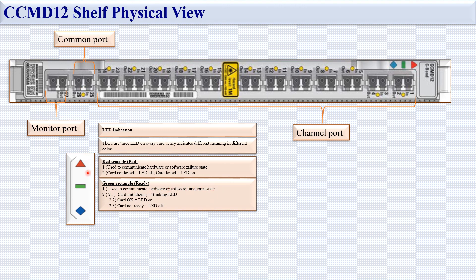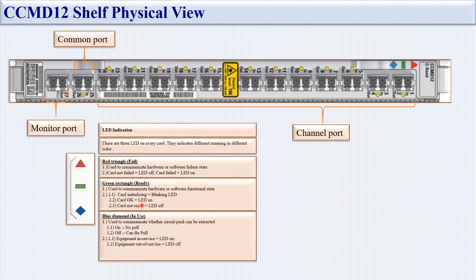The green rectangle indicates 'Ready' — it communicates hardware or software function status. If the green LED is on, the card is okay. If it is off, the card is not ready. If it is blinking, the card is initializing. The blue diamond indicates 'In Use' — it shows whether the circuit pack can be extracted. If the blue LED is on, do not pull; if off, it can be pulled. If on, equipment is in service; if off, it is out of service.